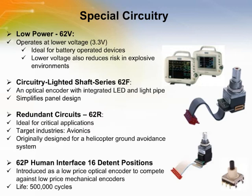The 62F is an optical encoder with an LED and light pipe incorporated into the shaft. The 62F simplifies the customer's design when the knob is required to be illuminated. The customer does not have to worry about incorporating the lighting circuitry into their panel.